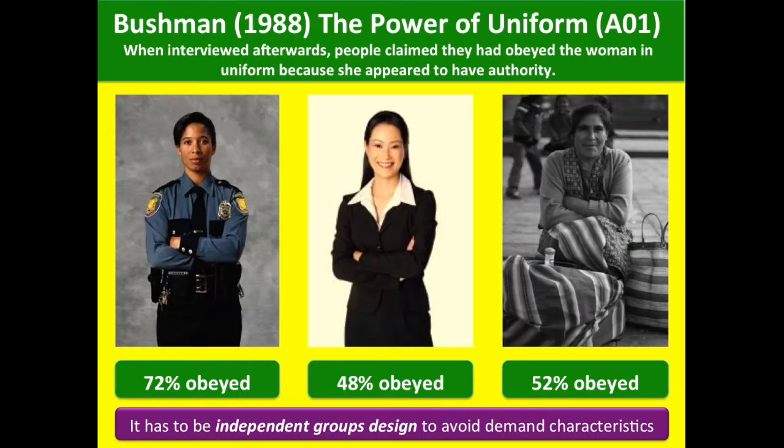So it was a field experiment. We wanted to see whether people would obey these different people dressed in their different outfits, and the results — if you're interested — were 72% obeyed the police officer, 48% the business executive, and 52% the beggar. We can see how the power of the uniform of the police officer meant that people were more likely to obey.